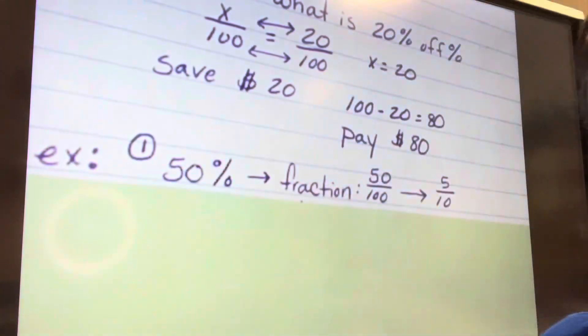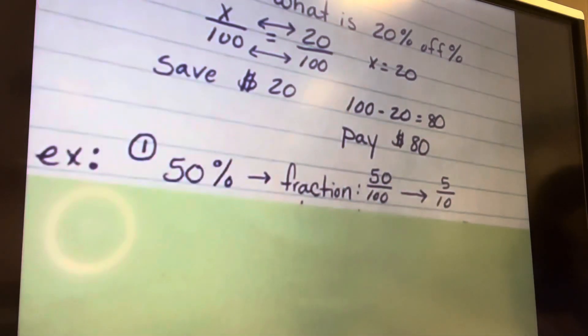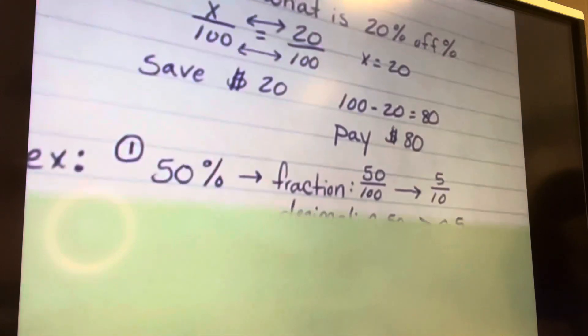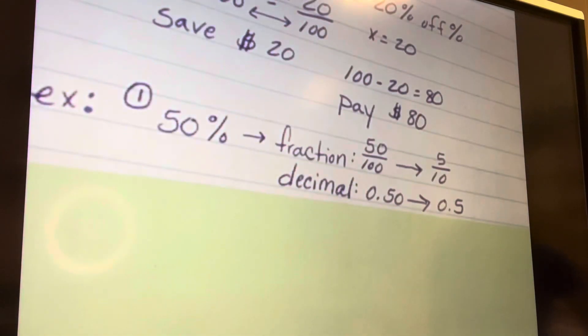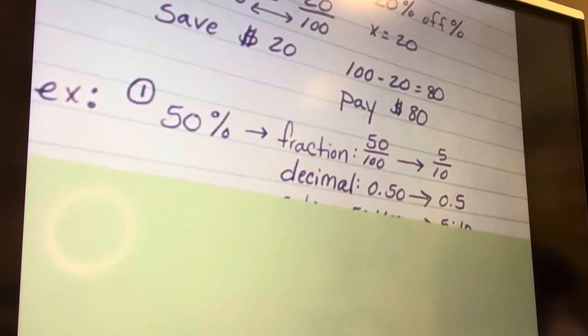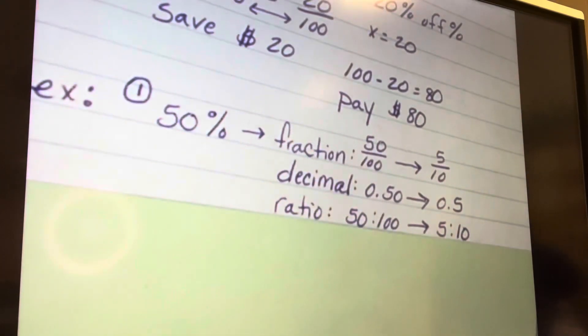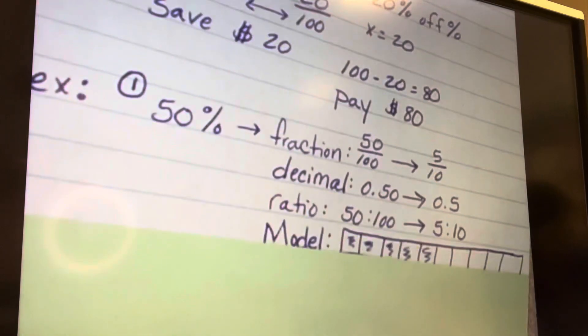Some of you might actually have to do the math to see it. So 50 hundredths can also be written as 5 tenths. We can write it as a decimal, 50 cents, 5 tenths, 50 hundredths. And we can write it as a ratio, 50 to 100 or 5 to 10. And we can model it.